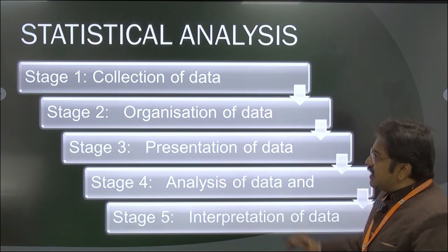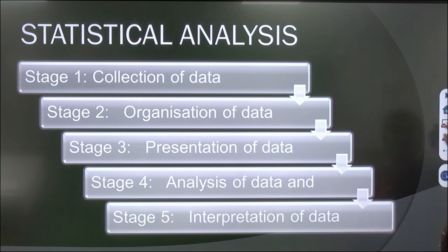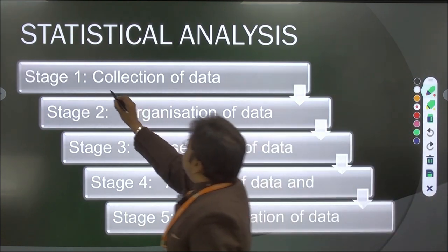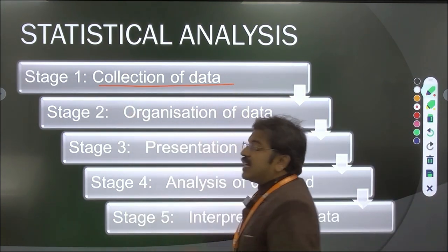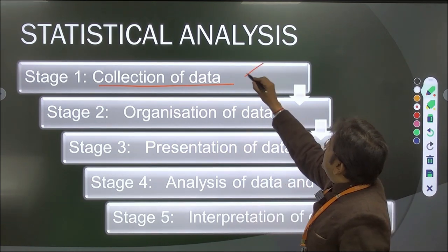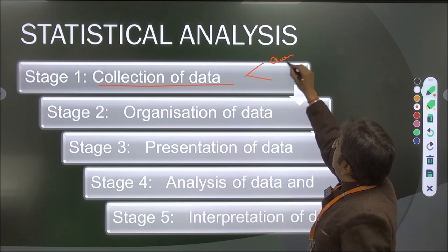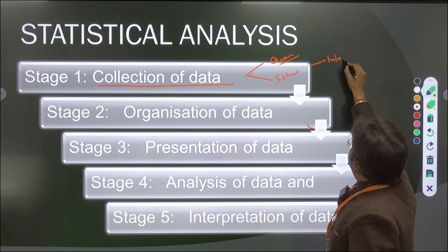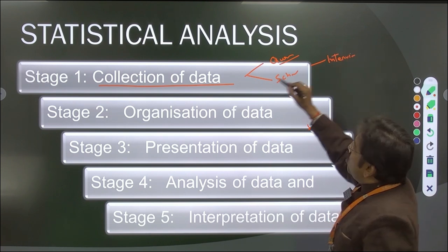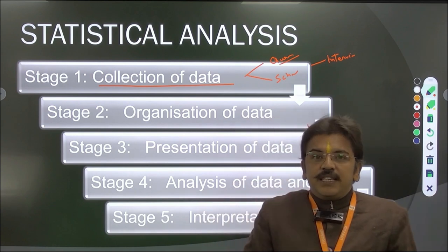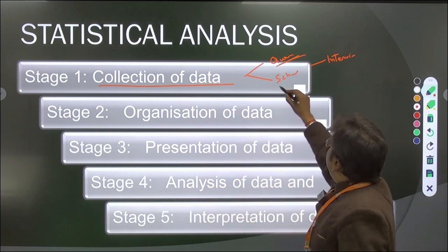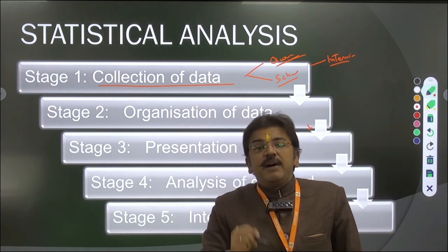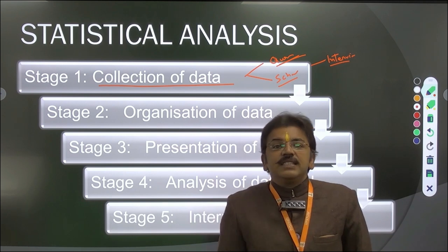Statistical analysis is defined into 5 stages. The first stage is the collection of data, done by two methods: first by questionnaire, and second by schedule or interview method. Sometimes a researcher collects data by secondary sources, that is published data.